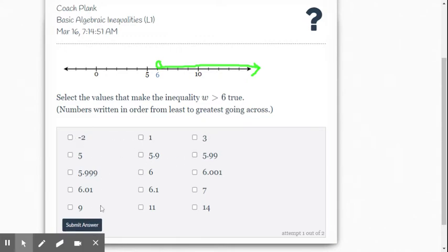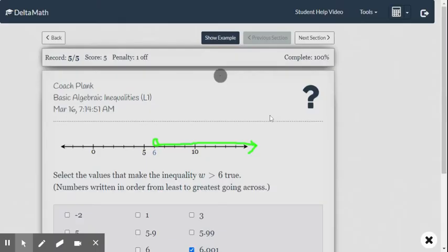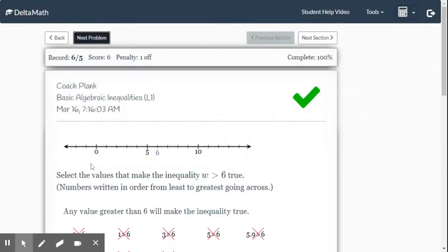So from 6 we pick 6.001, 6.01, 6.1, 7, 9, 11, 14. Submit our answer, yep, and boom we got it.